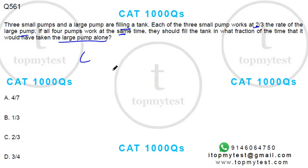So you have a large pump and three small pumps. The small pump is two-thirds the rate. Right, so if this fills three units, this will take two, two, and two.